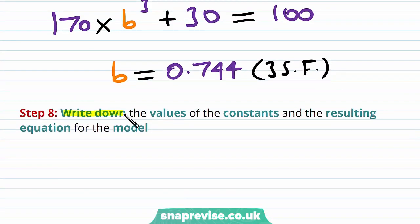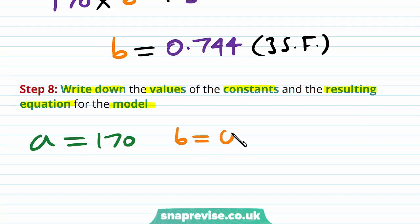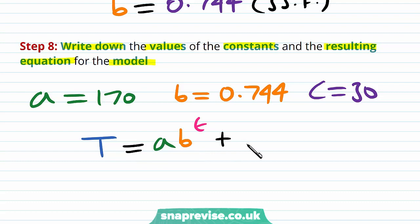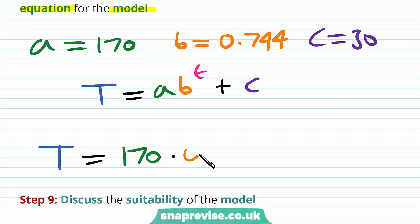The eighth step is to write down the values of the constants and the resulting equation. We have a equals 170, b equals 0.744, and c equals 30. Therefore, since in general T equals a times b to the power of t plus c, our model is T equals 170 multiplied by 0.744 to the power of t plus 30.